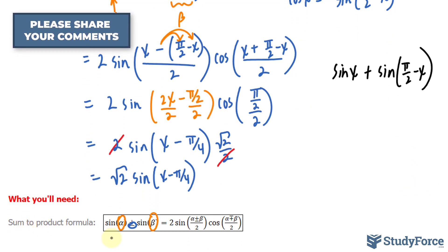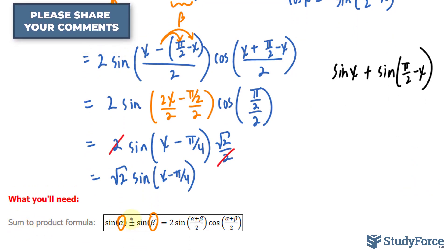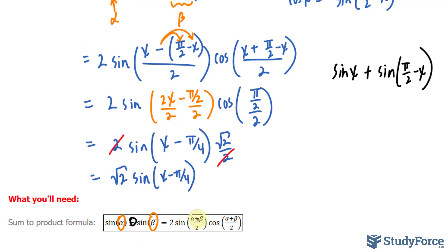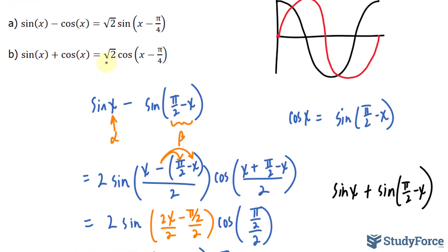Again, we'll be applying the sum-to-product formula, but this time we'll be using the plus version. And so, that part should be alpha plus beta, and that part should be alpha minus beta. I won't show you the complete simplification, but do trust me that you end up getting the square root of 2 cos, and in parentheses, x - π/4.